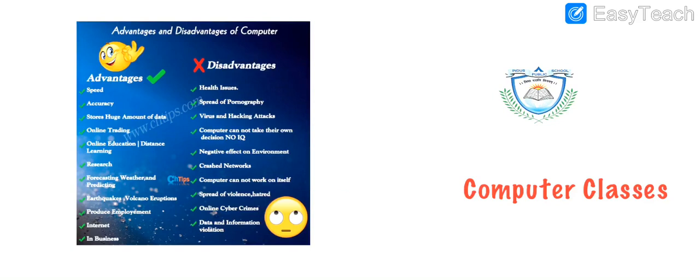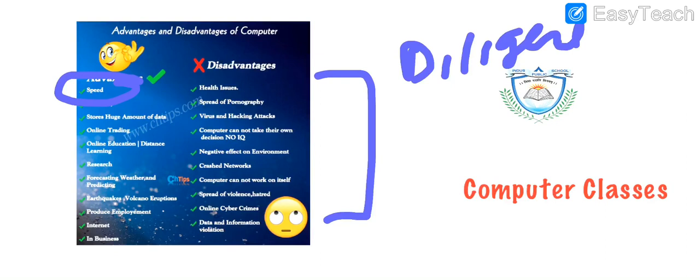My dear students, advantages and disadvantages and all these terms. What is the meaning of speed? What is the meaning of accuracy? What is the meaning of diligently? Why computers are called diligent? All these terms I will be explaining you. But today was the basic introduction of the computers, which you should know that computer is a machine. Similarly, we have different machines which help us to reduce our work and which help us to do our work quickly and easily.